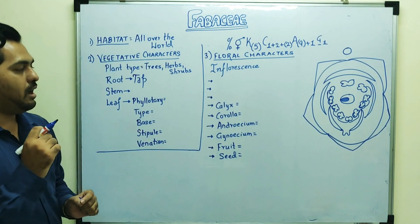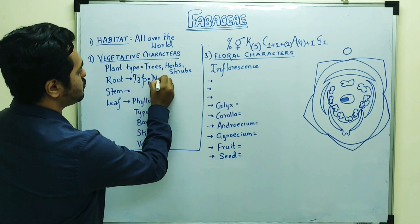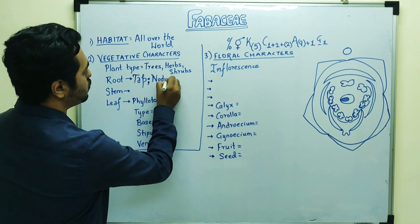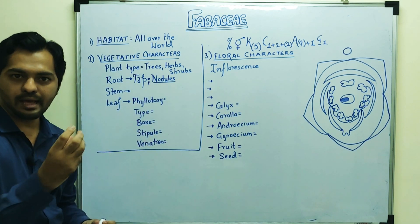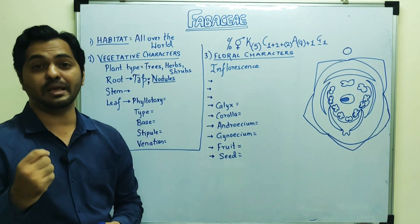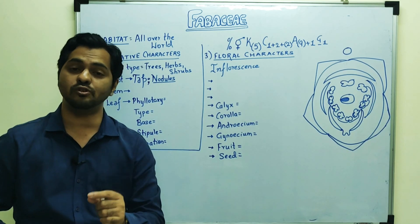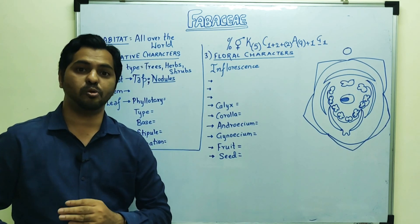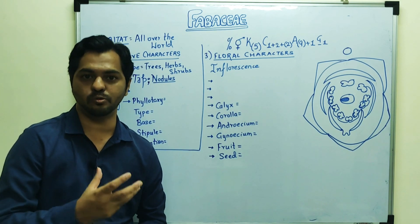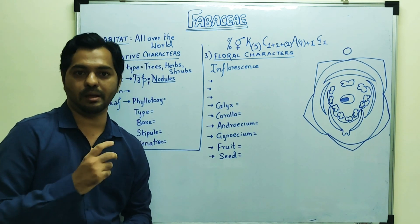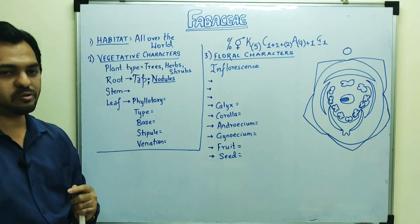In the Leguminaceae family there is a presence of root nodules — their tips show swelling, and there is a nitrogen-fixing bacteria called Rhizobium, specifically Rhizobium leguminosarum or Rhizobium phaseoli. This is a symbiotic bacteria showing association with the root nodules of leguminous plants.